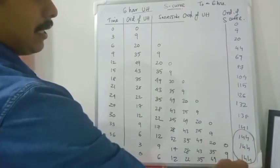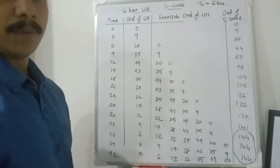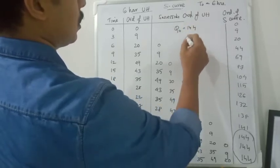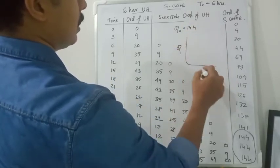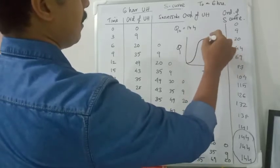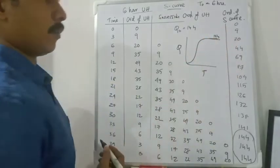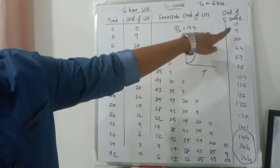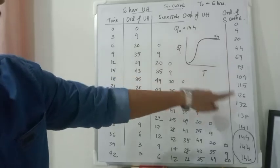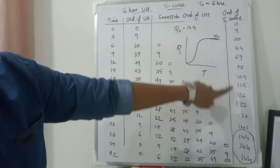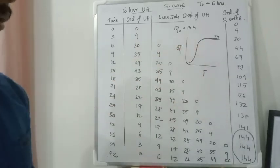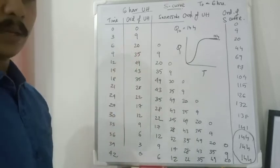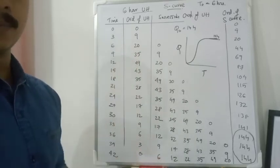As you can see, you will get an equilibrium value — a constant value of 144 — as Q0. The shape will be a gradual increase with a lesser slope toward the end. This is how you obtain the ordinates of the S-curve from a unit hydrograph. There is also an alternate method, which we will now look at.